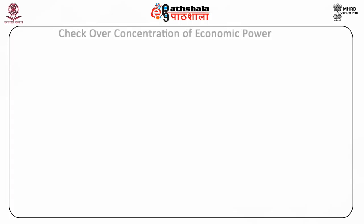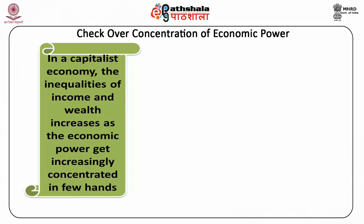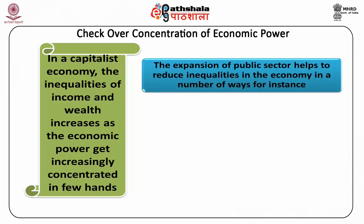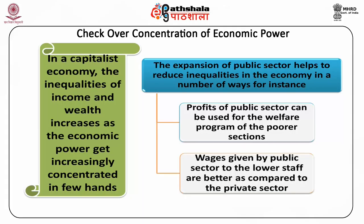Check over concentration of economic power: In a capitalist economy, the inequalities of income and wealth increase as the economic power gets increasingly concentrated in a few hands. The expansion of public sector helps to reduce inequalities in the economy in a number of ways. For instance, first, profits of public sector can be used for the welfare programs of the poorer sections; second, wages given by public sector to the lower staff are better as compared to the private sector.